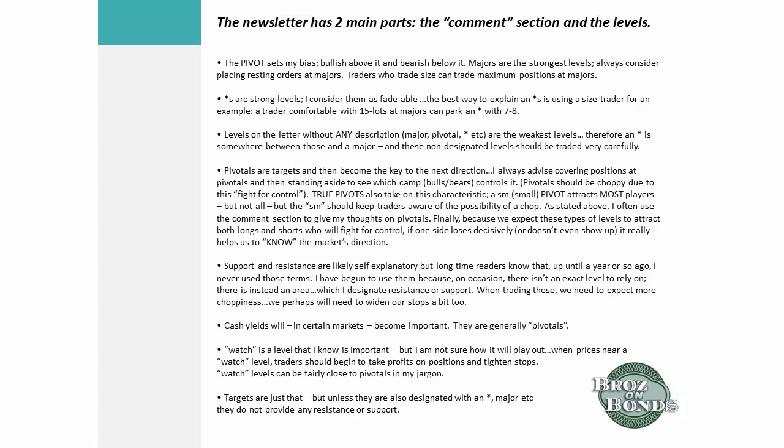Traders who trade size can put their most size on at majors. The small asterisks are strong levels, and in the current market going back six years you can fade those. If you're a 15-lot trader, you might drop down to seven or eight at asterisk levels but you can certainly fade them and initiate trades off them. For example, if someone in the MTS room says 'buy 141-16 in bonds' and my newsletter says 141-13, you buy 141-14 and 141-15.